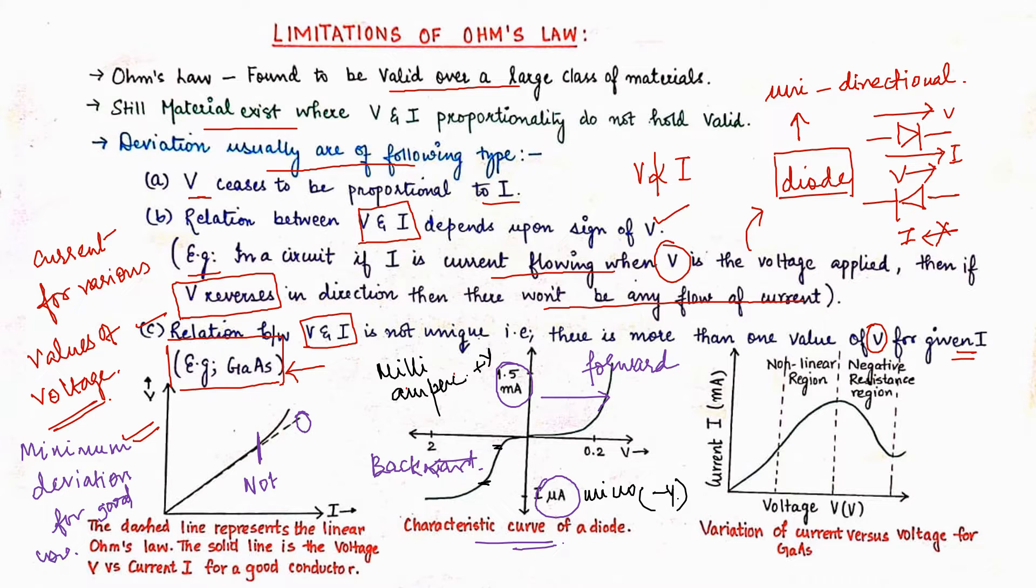Zener diode is a diode which has specific properties and which actually works in the backward applied voltages. It has few ranges and characteristics and this shows that particular characteristic of Zener diode, whereas this is a normal diode's characteristic.